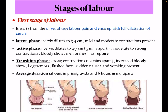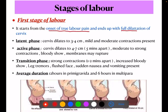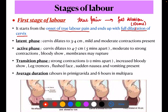First stage of labor starts from onset of true labor pain and ends with full dilatation of cervix, which is 10 centimeters. This first stage is divided into three sub-stages. First is the latent phase — cervix dilates up to 3–4 centimeters, with mild to moderate contractions. Second is the active phase — from 4 to 7 centimeters, contractions five minutes apart, moderate to strong, with bloody show present.